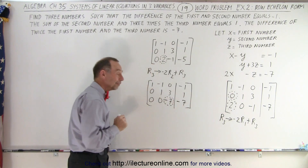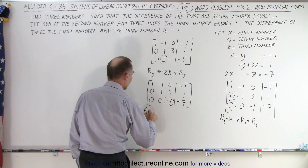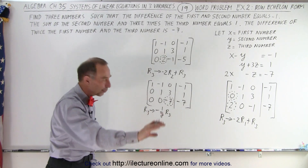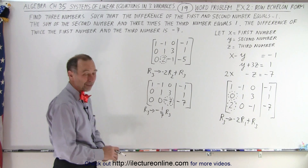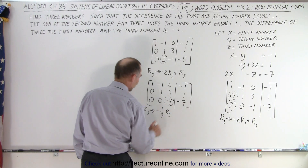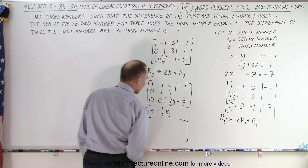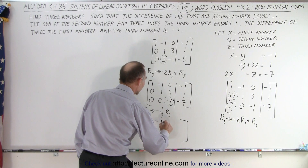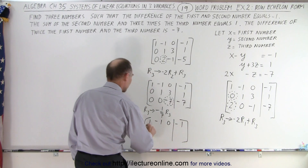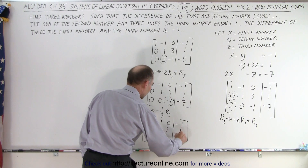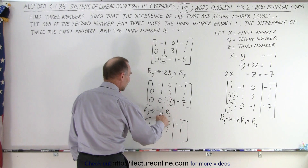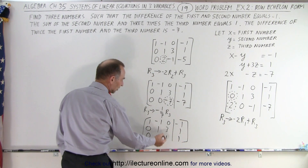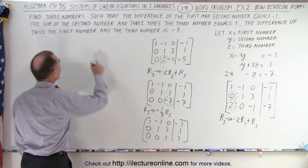Now we need to turn that last pivot into a one. We take row three and replace it by negative one-seventh times row three — in other words, dividing everything in that row by negative seven. This turns both the coefficient and constant into ones. Row one and row two do not change. In row three, negative seven divided by negative seven is one, and negative seven divided by negative seven is one. Now I have ones across the diagonal and zeros below.